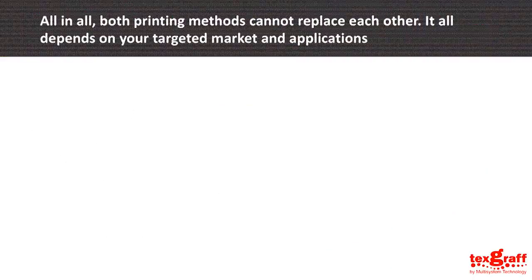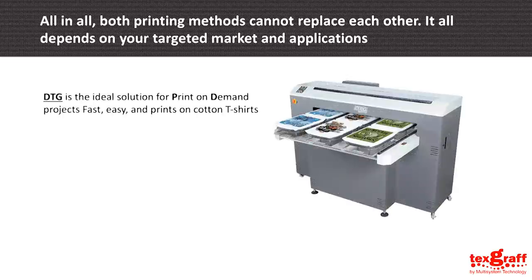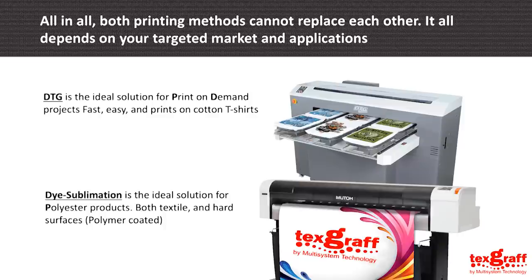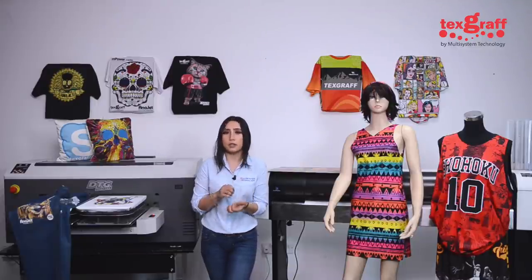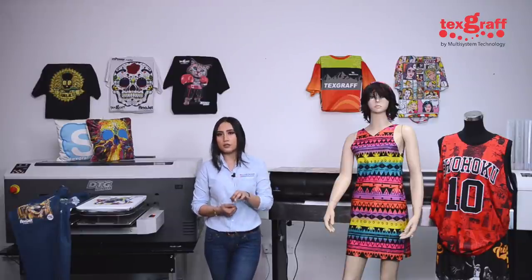To conclude, both printing methods cannot replace each other. As stated from the beginning, it depends on your targeted market and applications in your business model. DTG is the ideal solution for print-on-demand projects or custom customer designs — it is fast, easy, and prints on cotton t-shirts. On the other hand, dye sublimation is the ideal solution for polyester and polymer-coated products. I hope this presentation answered all your questions regarding which printing method is most applicable to your business model. Please do not hesitate to contact us for any information or visit our website at www.texgraph.com.